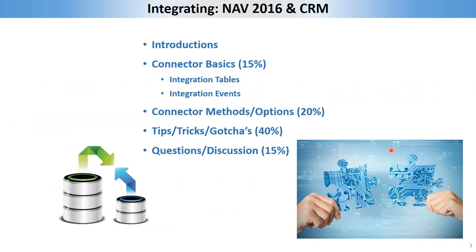So I think next up would just be giving an outline of what I'm looking to talk about today. And if you'll forgive the scratchiness of my voice, I got a bit of a cold today. We've got three introductions, and next would be starting with just a few basics about the connector — integration tables, integration events — and then moving into more advanced topics about how the connector works and three different ways to synchronize records. Then we move into the tips and tricks and gotchas behind the CRM integration with NAV 2016, and we'll complete with any questions.